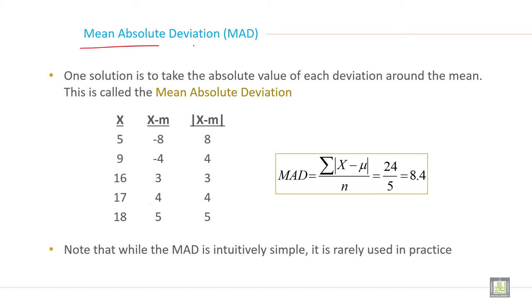Then mean absolute deviation, MAD. One solution is to take the absolute value of each deviation around the mean. This is called the mean absolute deviation. For example, this is the raw data given.